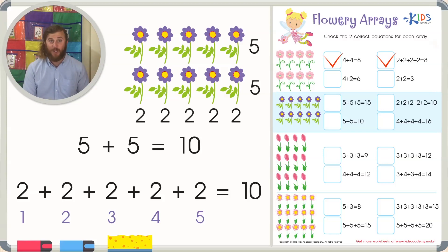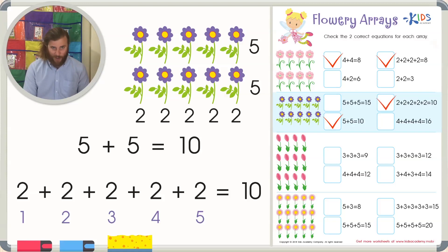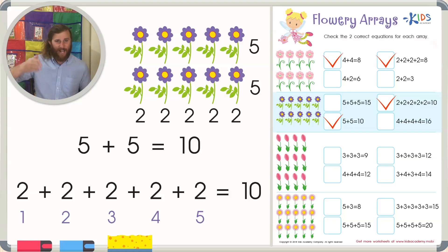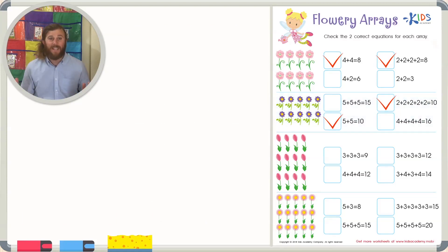Let's check our two correct equations: five plus five equals ten, and two plus two plus two plus two plus two also equals ten. Remember, all we're doing is counting the rows and the columns to find the equations.